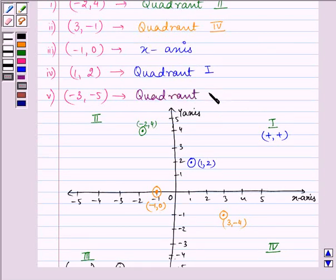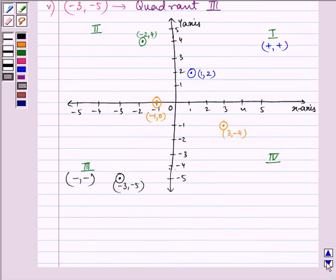and we'll write the answer as quadrant III. So this completes the question and simultaneously we have plotted all the points in the figure we have drawn below.